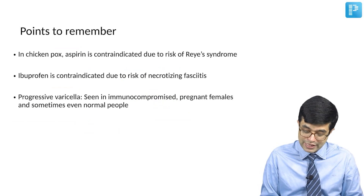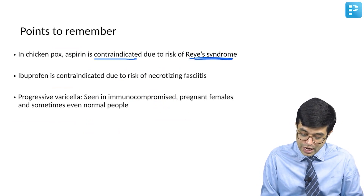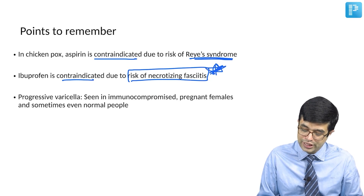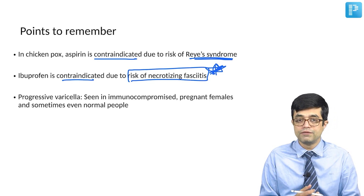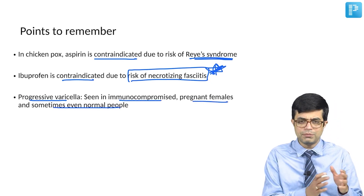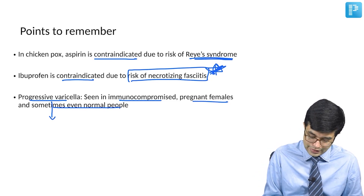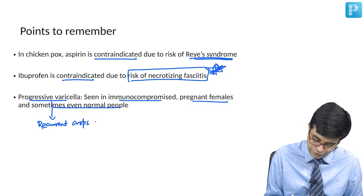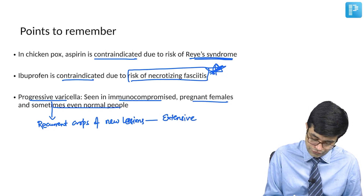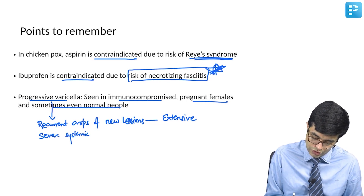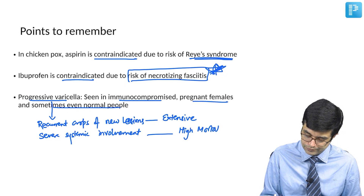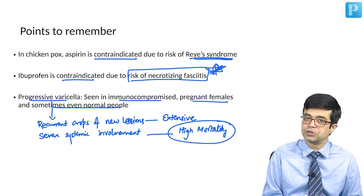Points to remember: in chickenpox, aspirin is contraindicated due to the risk of Reye's syndrome, and ibuprofen is also contraindicated due to the risk of necrotizing fasciitis. For fever, only paracetamol (acetaminophen) is indicated. Progressive varicella is seen in immunocompromised patients, pregnant females, and sometimes normal individuals. It is associated with recurrent crops of extensive new lesions plus severe systemic involvement including encephalitis and myocarditis, with high mortality. Fortunately, it is seen in less than 0.5% of individuals.